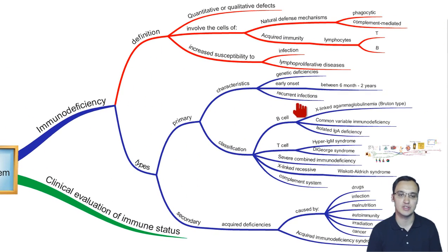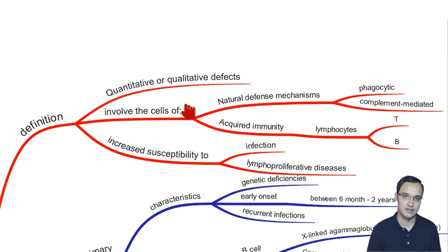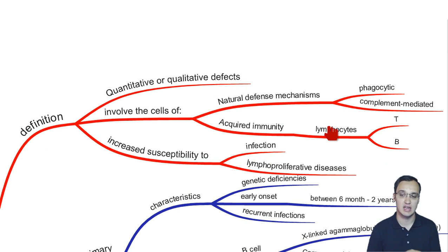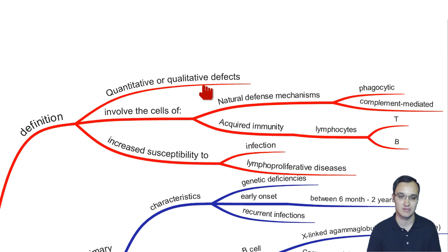So what is immunodeficiency? We can define it as a quantitative or qualitative defect of the lymphocytes, like T and B lymphocytes, or the natural defense mechanisms like phagocytic cells or the complement system. Quantitative means we have a reduced number of these cells, or qualitative meaning the quality of these cells is bad. These patients will typically have a susceptibility to infections and lymphoproliferative diseases.